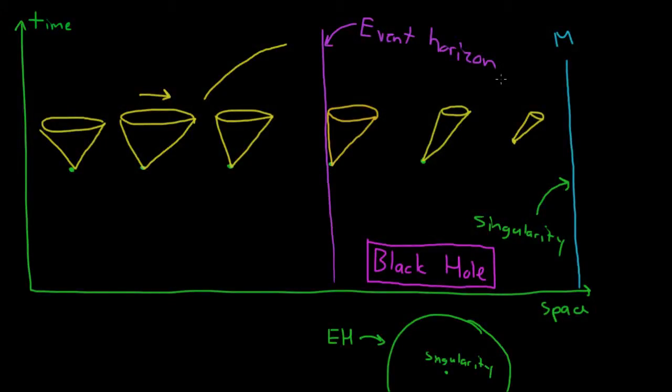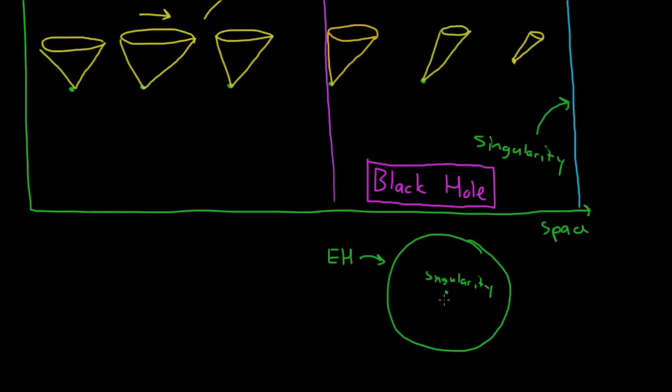In the last video we talked about how, according to general relativity, massive objects curve the geometry of space-time around them. And if we have a large enough mass compressed into a small enough area, we can get a region where if you enter, no matter what you do, you cannot escape. We call this a black hole. The outer edge of the black hole is called the event horizon - it's the point of no return. At the very center we have the singularity, where all of the mass has collapsed into an infinitely small point.